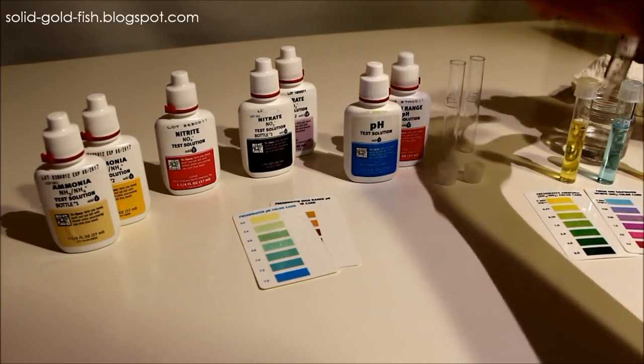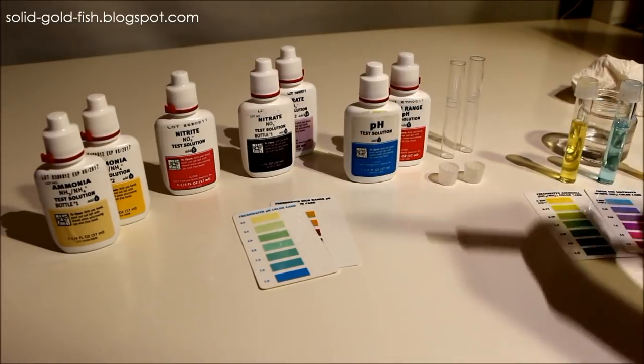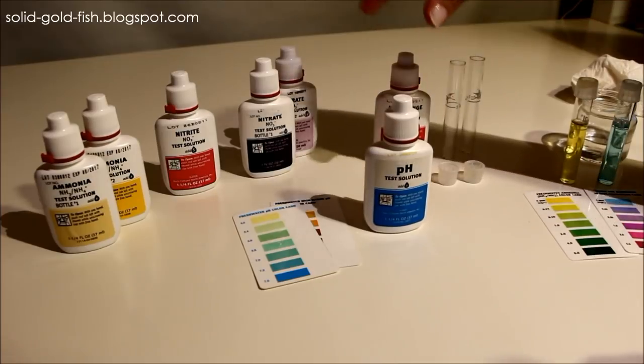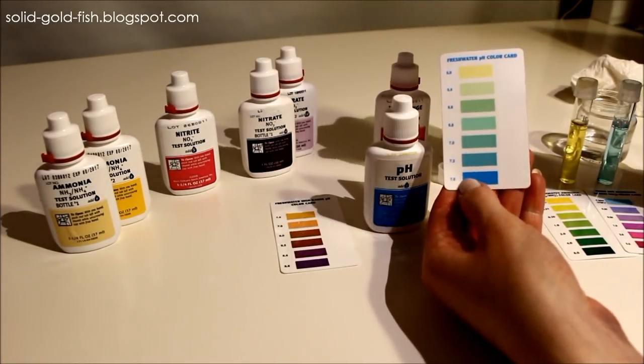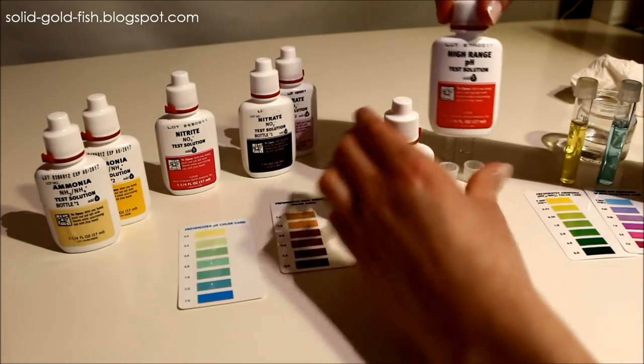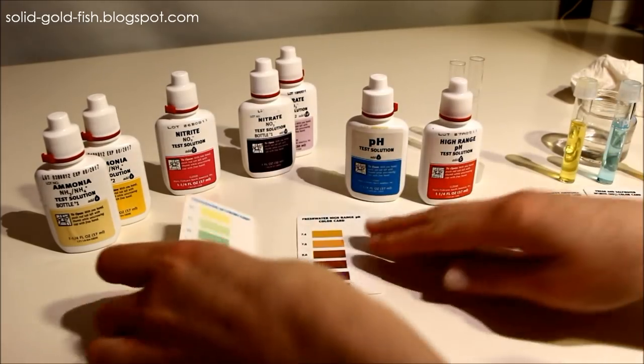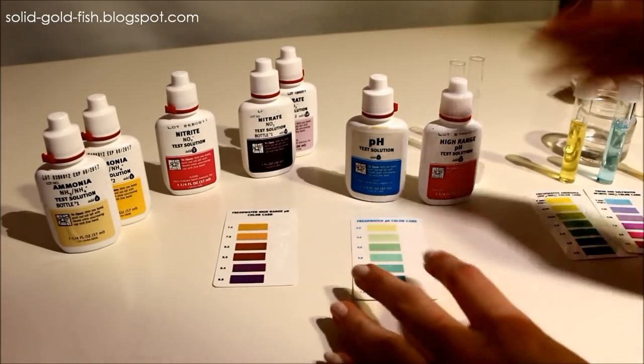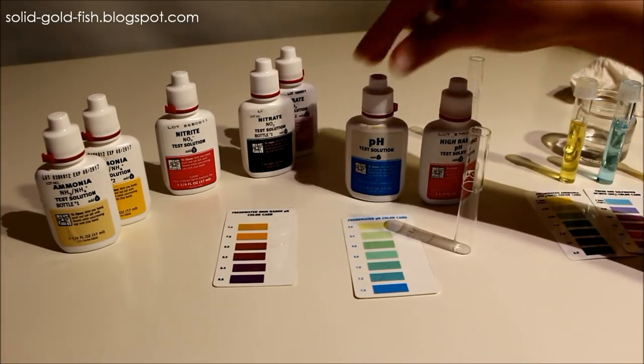The pH ones are really easy and it comes with a regular pH test which tests from 6.0 to 7.6, and a high range which tests from 7.4 to 8.8. If you've never tested your water before and you don't know what the pH is going to be, you should use the regular one first.